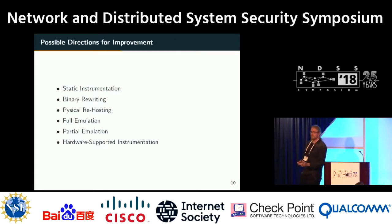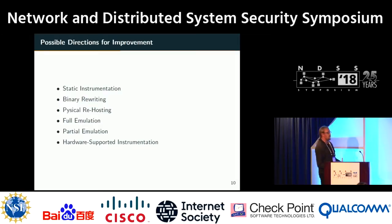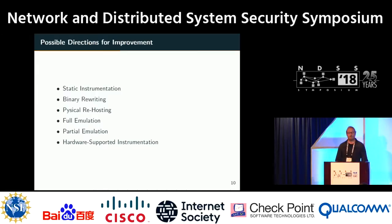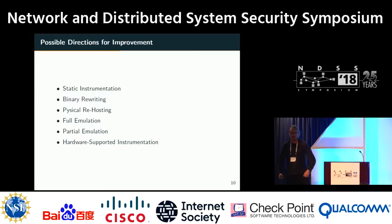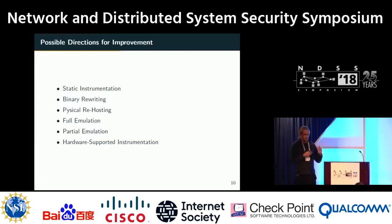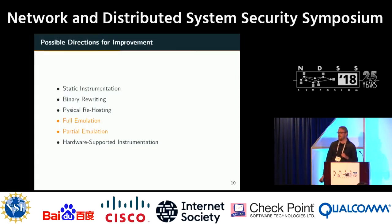With this knowledge, we looked at what methods and tools are already available to improve this situation. We investigated six different methods: static instrumentation, binary rewriting, physical rehosting, full emulation, partial emulation, and hardware-supported instrumentation. We analyzed their prerequisites and applicable scenarios, and for the second part of our work we focused on full emulation and partial emulation as the best-fitting candidates for our case.